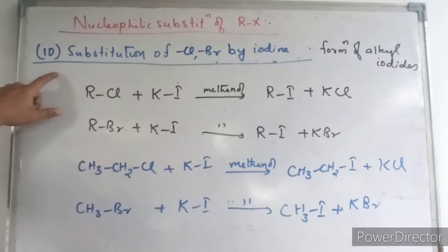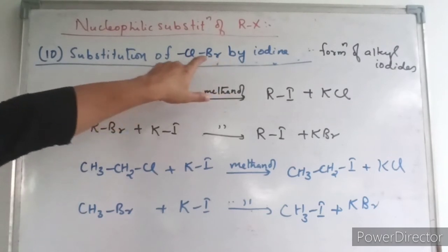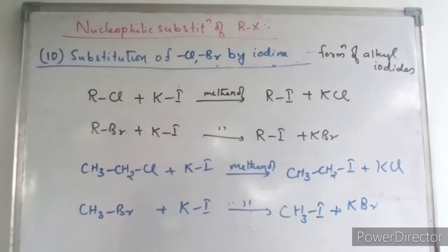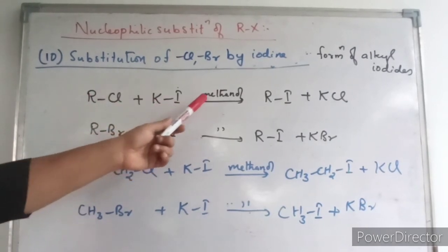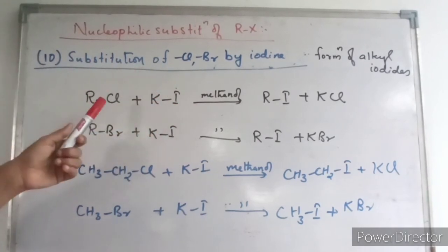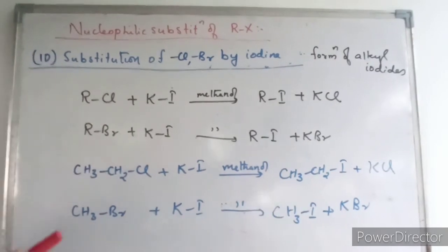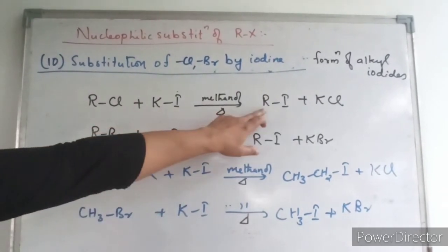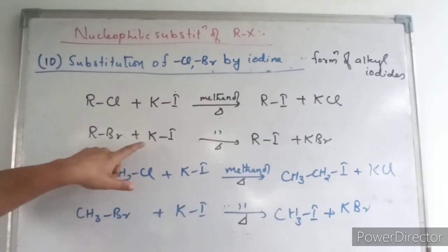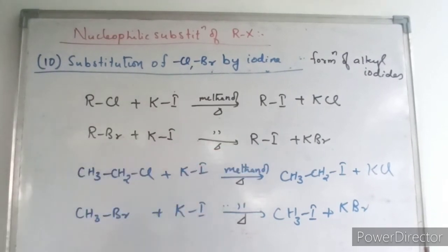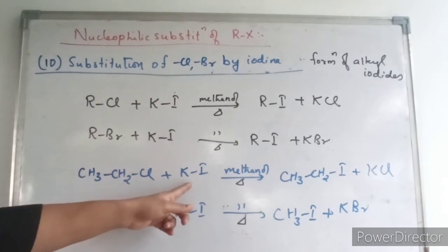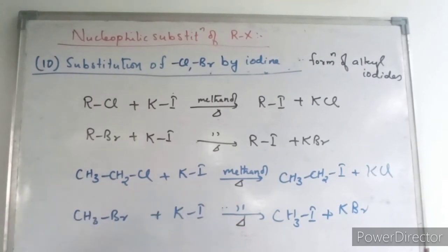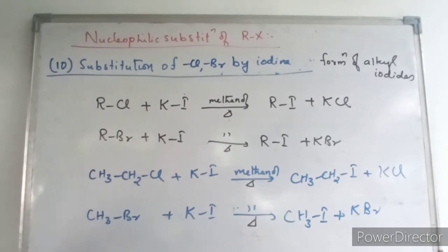The 10th reaction is substitution of chlorine and bromine by iodine. Halogens like chlorine or bromine are substituted by iodine, giving corresponding alkyl iodides. Alkyl halide is treated with potassium iodide under acetonic conditions with heat. When alkyl chlorides or bromides are heated with potassium iodide, you get the corresponding alkyl iodide plus KCl or KBr. For example, ethyl chloride plus KI gives ethyl iodide, and ethyl bromide plus KI gives ethyl iodide plus KBr. These are the ten substitution reactions of alkyl halides discussed.